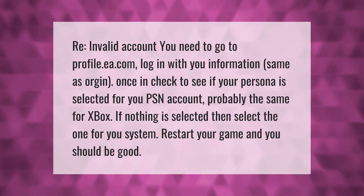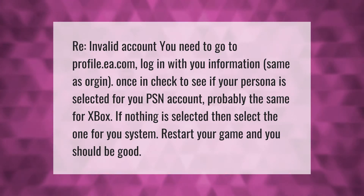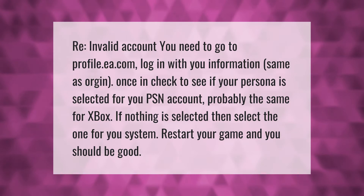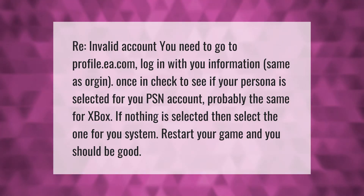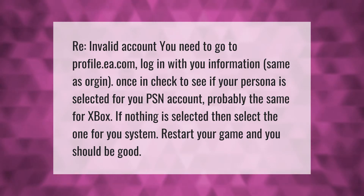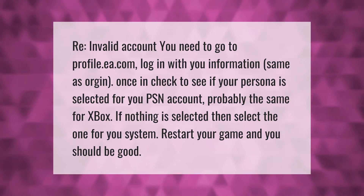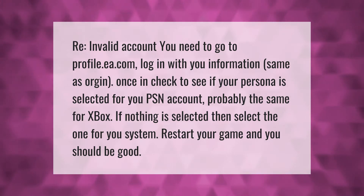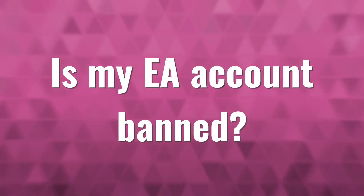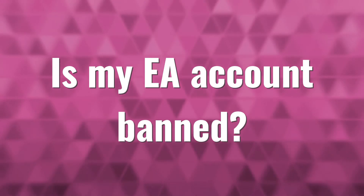If you have an invalid account, you need to go to profile.aia.com and login with your information, same as Origin. Once in, check to see if your persona is selected for your PSN account — probably the same for Xbox. If nothing is selected, then select the one for your system, restart your game, and you should be good.